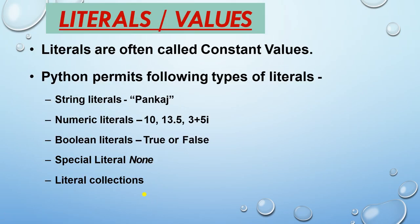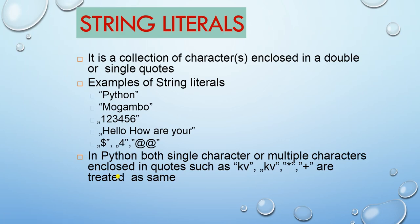Next is literals, also called values or constants — literals are fixed. Python permits the following types of literals: string literal (e.g., 'pankaj'), numeric literal, boolean literal (true or false), and a special literal which is none. A string literal is a collection of characters enclosed in double or single quotes. Both ways are valid.